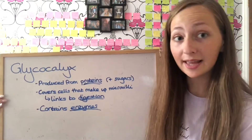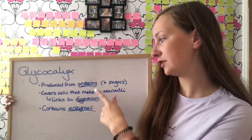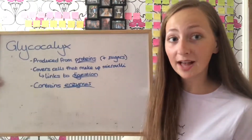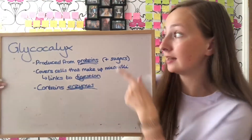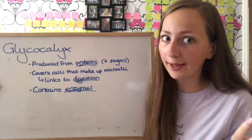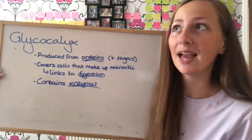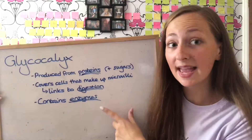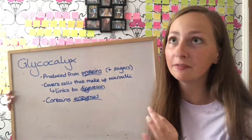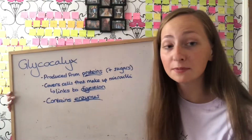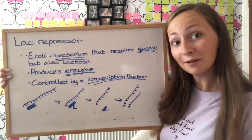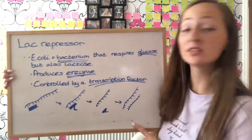Glycocalyx is a highly charged outer layer of the plasma membrane, produced from proteins and sugars. Each cell making up the microvilli is covered in glycocalyx, which provides protection against liquid food in digestion — called chyme. It also contains enzymes to aid digestion. Bacteria also have glycocalyx; their thick layer helps them adhere to surfaces and to each other in extreme environments.